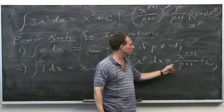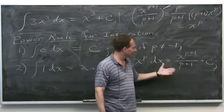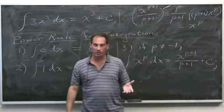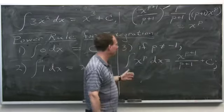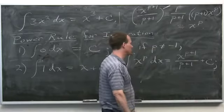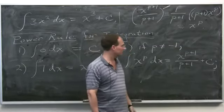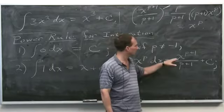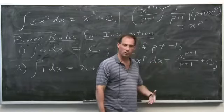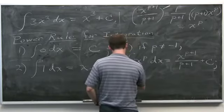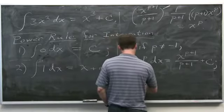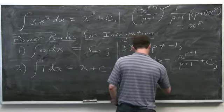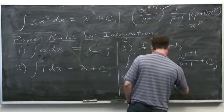You can't do this if p is minus 1 — you'd be dividing by 0, which is a big no-no in math. If you say the anti-derivative of x to the minus 1 is x to the 0 over 0, that's undefined. That's really bad.